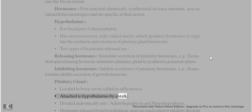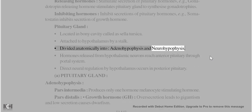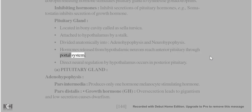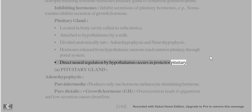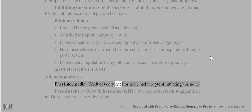Pituitary gland is located in a bony cavity called the sella turcica, attached to the hypothalamus by a stalk. It is divided anatomically into adenohypophysis and neurohypophysis. Hormones released from hypothalamic neurons reach the anterior pituitary through the portal system. Direct neural regulation by hypothalamus occurs in the posterior pituitary.